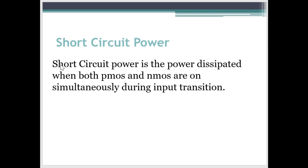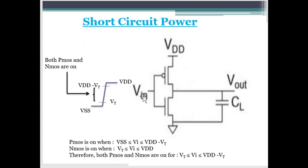By definition short circuit power is the power which is dissipated when both PMOS and NMOS are simultaneously on during input transition. To understand this definition let's consider this scenario. The input is switching from VSS to VDD. PMOS is ON when the input is between VSS to VDD-VT. And NMOS is ON when the input is from VT to VDD.